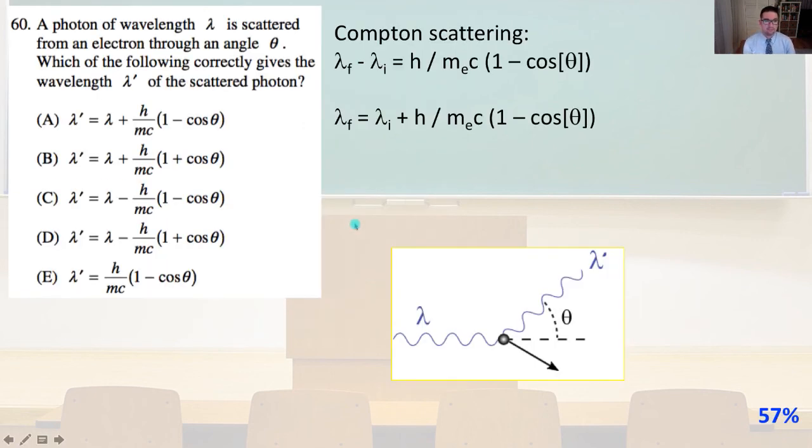Number 60, a photon of wavelength λ is scattered from an electron through an angle θ. Which of the following correctly gives the wavelength λ' of the scattered photon? So Compton scattering, λ final minus λ initial equals H over M, the mass of the electron, times C, the speed of light, times the quantity 1 minus cosine of θ. So λ final is going to equal λ initial plus H over the mass of the electron times C, the speed of light, times the quantity 1 minus cosine θ. And that simply is answer A.